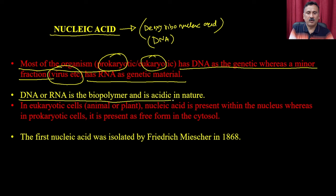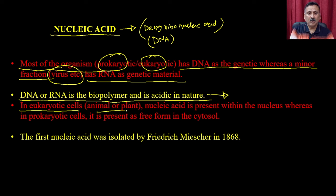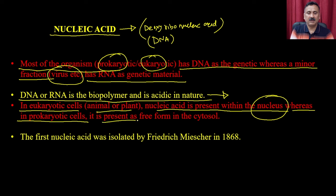DNA or RNA is a biopolymer and is acidic in nature — that is why it is called nucleic acid. In eukaryotic cells, animal or plant, the nucleic acid is present within the nucleus. In prokaryotic cells, it is present as a free form in the cytosol. The first nucleic acid was isolated by a scientist known as Friedrich Miescher in the year 1868.